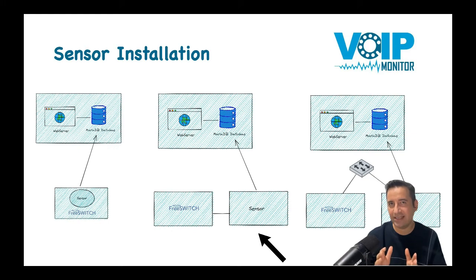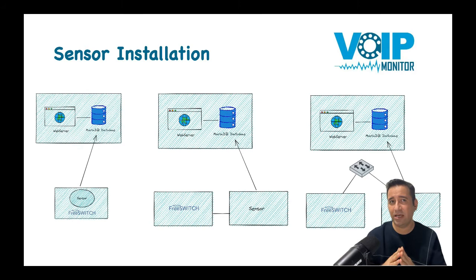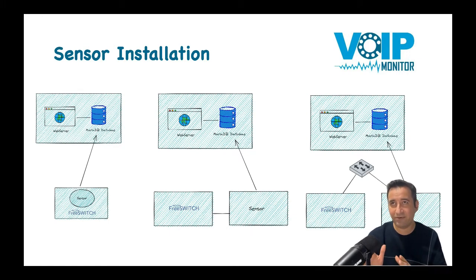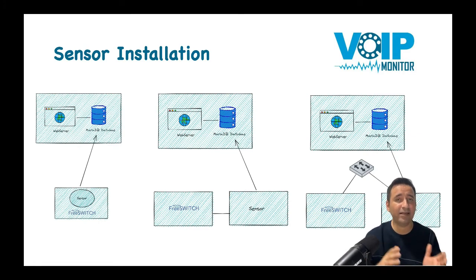In the second method, we can install the VoIP Monitor sensor on a dedicated physical box or a virtual machine, and then connect our PBX system to this dedicated box. Your PBX system should have an extra network interface to connect to our VoIP sensor machine. In this method, since we are using dedicated resources for our VoIP sniffer, it won't affect our PBX functionalities even under high load. The downside is that your PBX system needs that additional network interface.